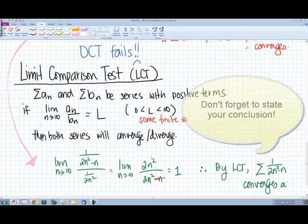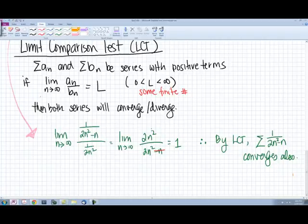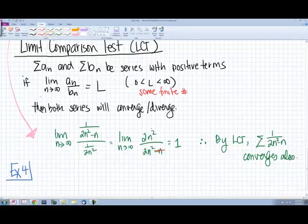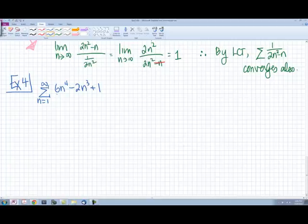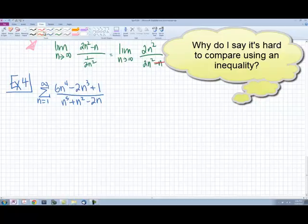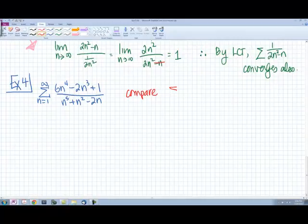1 over 2n squared minus n converges also. Because we did already prove our other series, our known series, converged by the P-series test. So then we're done. So let's try one other example. Let's have n equals 1 to infinity of 6n to the 4th minus 2n cubed plus 1 all over n to the 5th plus n squared minus 2n. So this particular one, because of a bunch of minuses and pluses, it's pretty much impossible for you to be able to say you have some other series you're going to compare it to with either a greater than or a less than symbol. So we do have to start out with what we're comparing it to,